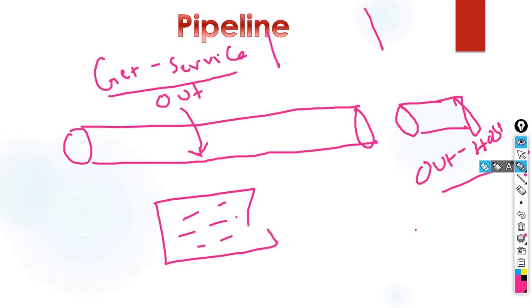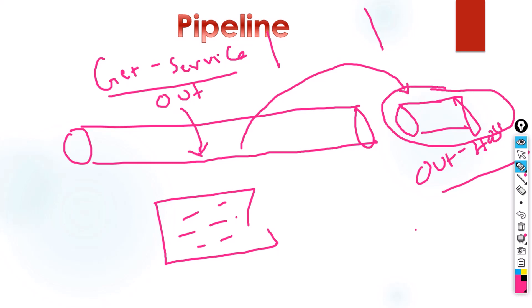When I run only Get-Service, it produces output kept in the pipeline, and that output is passed to the secret pipeline which is Out-Host. Out-Host's default behavior is to display the information on the console screen. If a cmdlet is not producing any output into the pipeline, then there is nothing that Out-Host will display on the console.